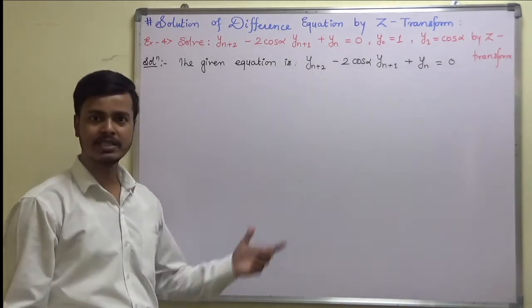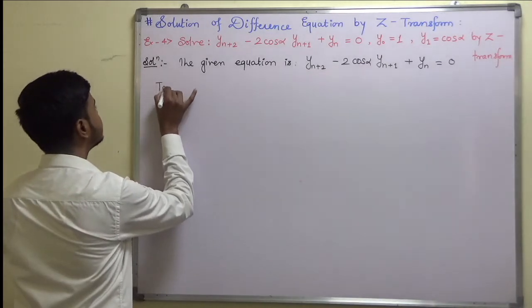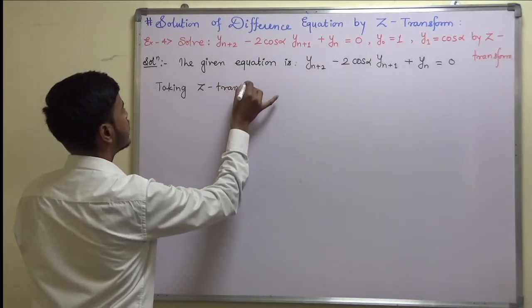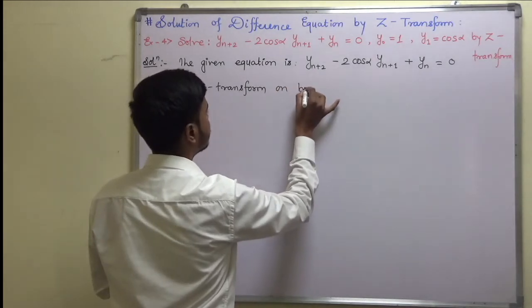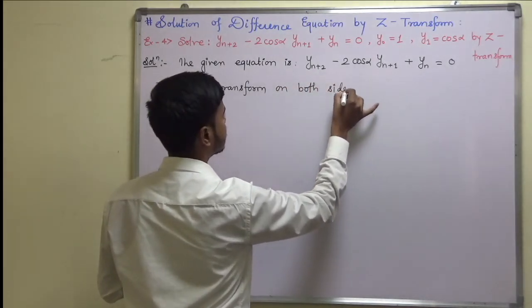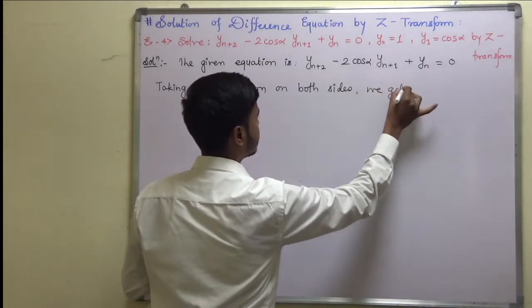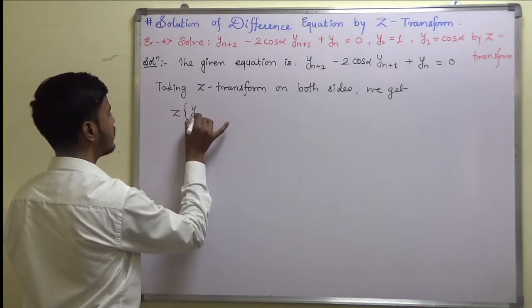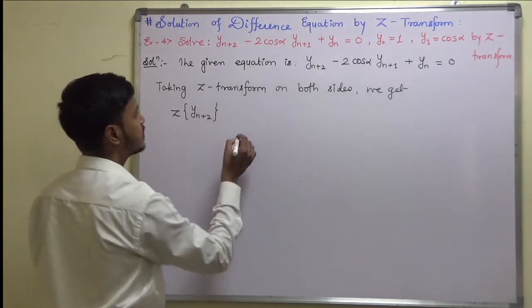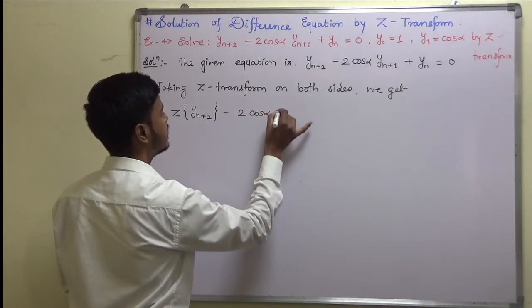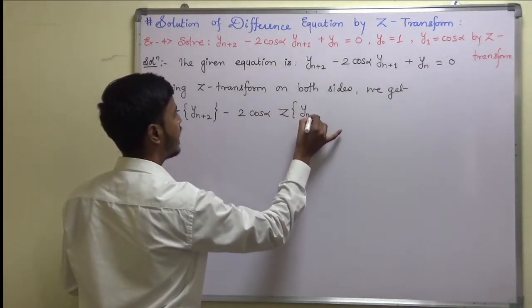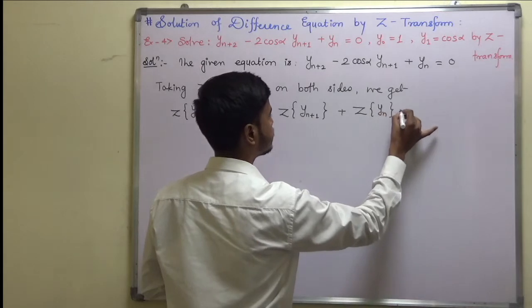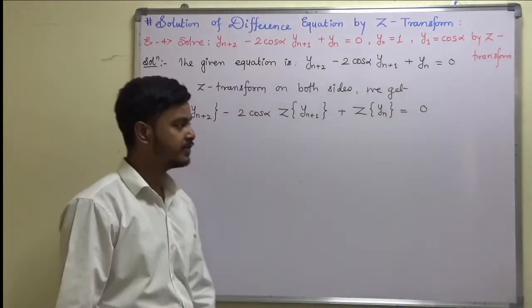Now what next? Just take the Z-transform. Taking Z-transform on both sides, we get Z-transform of y(n+2) minus 2cos(alpha) Z-transform of y(n+1) plus Z-transform of y(n). Z-transform of 0 is 0.